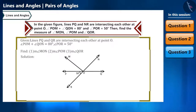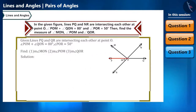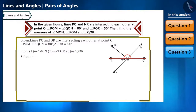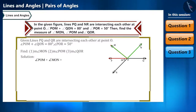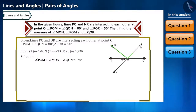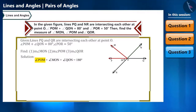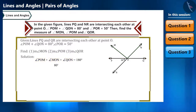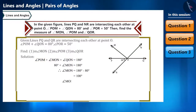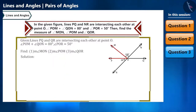Angle POQ is a straight line, so angle POQ equals 180 degrees, which means angle POM plus angle MON plus angle QON equals 180 degrees. We need to find angle MON. By substituting the measure of angle POM plus angle QON, which is 80 degrees, we find angle MON equals 100 degrees.